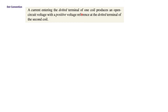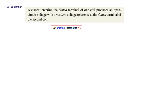If a current entering a dotted terminal of one coil produces an open circuit voltage with a positive voltage reference at the dotted terminal of the second coil. We just remember one thing: dot entering, dot positive — and that is in addition to the diagram. These two coils are linked with the flux lines or with the mutual inductance, and in this case the current I1 is entering the dot. So there will be a voltage induced in the secondary side and that voltage will have a positive polarity at the dot.